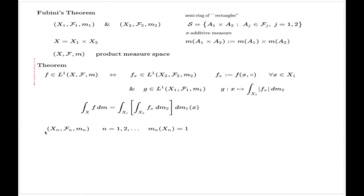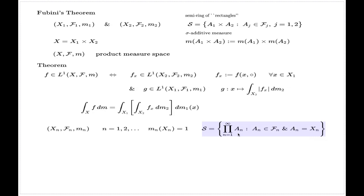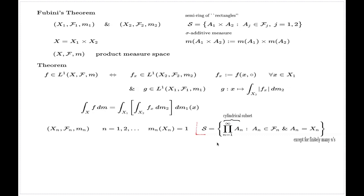First, you construct the semi-ring of cylindrical sets. That's the collection of all direct products of elements of the σ-algebra F_n, but with the condition that almost every a_n is just your universal set — in fact, every a_n in this product is a universal set except for finitely many a_n's. These kinds of sets I call cylindrical sets, or cylindrical subsets, and the collection like this forms a semi-ring of cylindrical subsets.